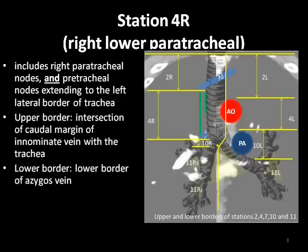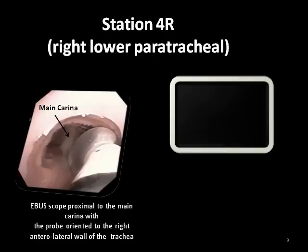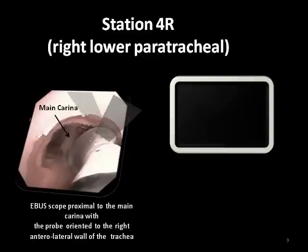The right lower paratracheal region, Station 4R, includes right lower paratracheal nodes and pretracheal nodes extending to the left lateral border of the trachea. The upper border is the intersection of the caudal margin of the innominate vein with the trachea. The lower border is the lower aspect of the azygous vein. The EBUS scope is placed just proximal to the main carina and turned towards the 3 o'clock position. However, 4R nodes are often pretracheal, in a more anterior position, so the scope needs to be turned counterclockwise towards the 12 o'clock position.